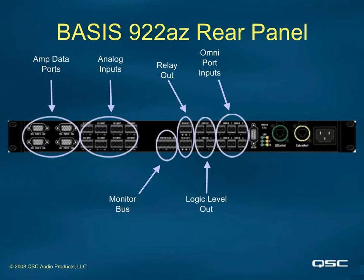The omnis can also receive variable resistance values. A simple 10k pot attached to a port will drive an 8-bit A-to-D converter from values of 0 to 255. These values can in turn drive any or all of the output levels of the Basis, providing a very simple yet effective volume level pot on a wall or lectern for one or more amp channels. The omnis can also use variable voltage ranges from 0 volts to 5 volts to perform the same function. So the omnis can receive contact closure, logic signals, variable resistance, and/or variable voltages.